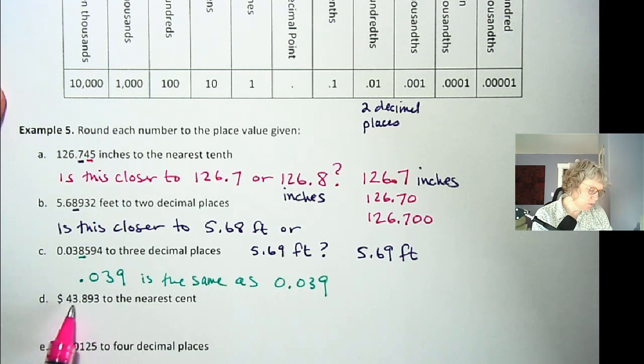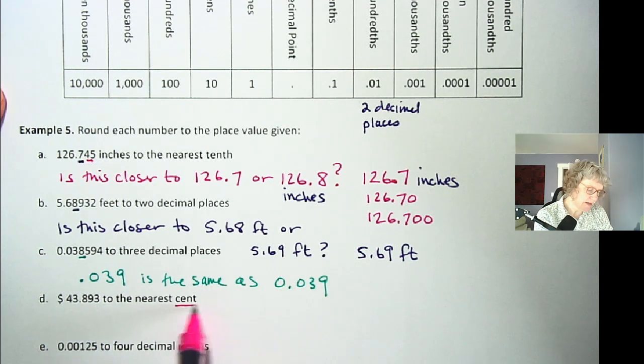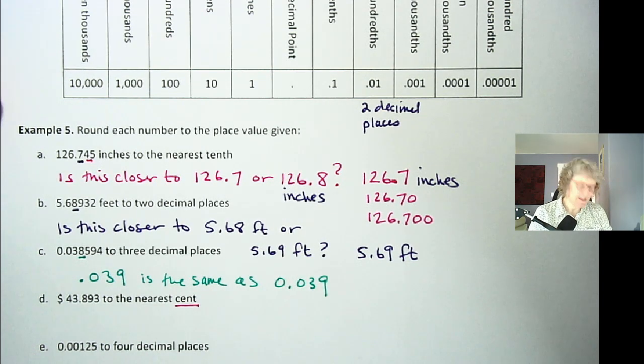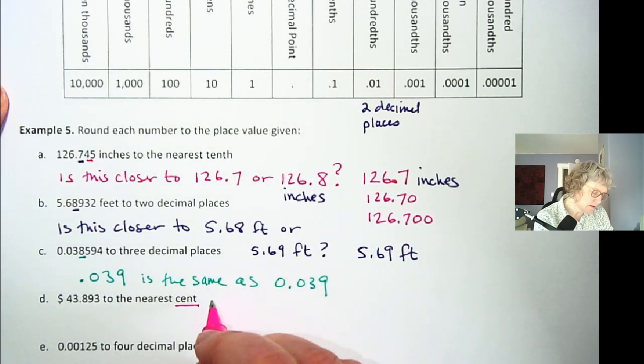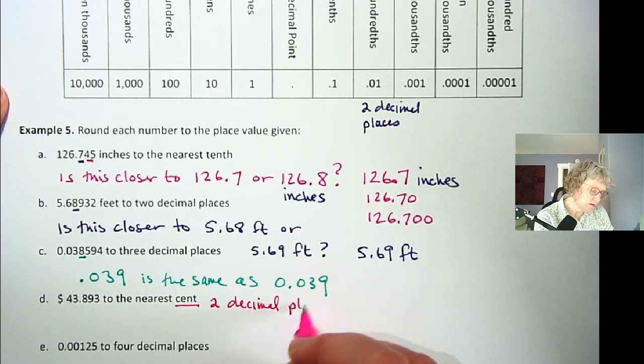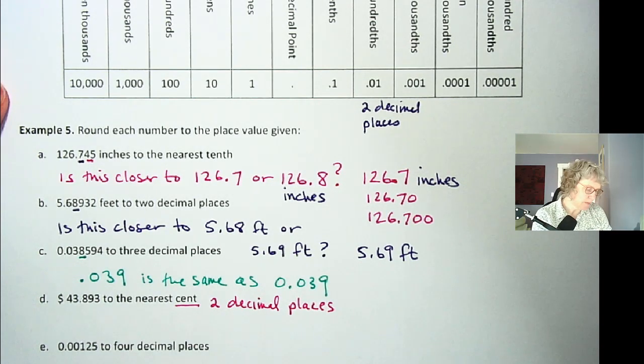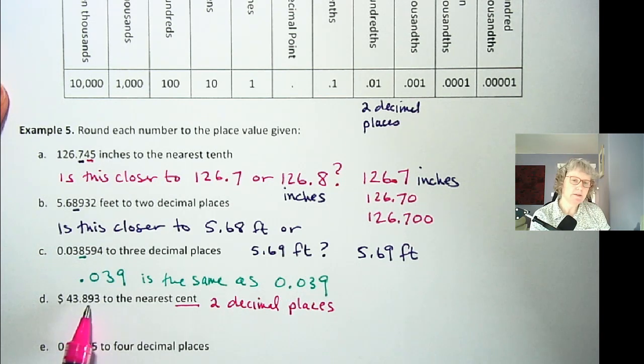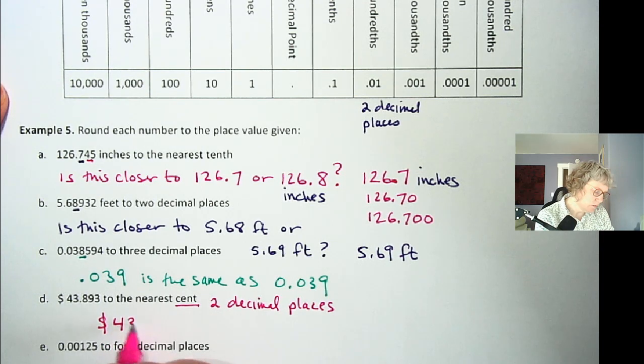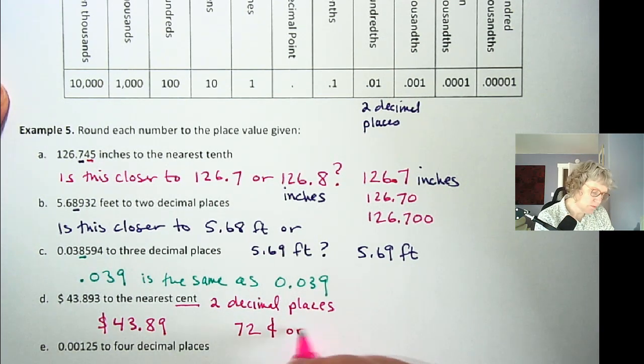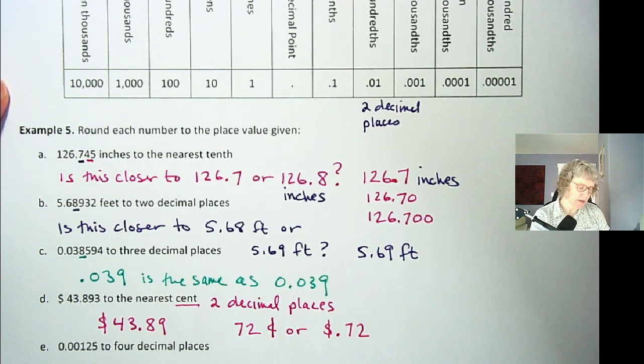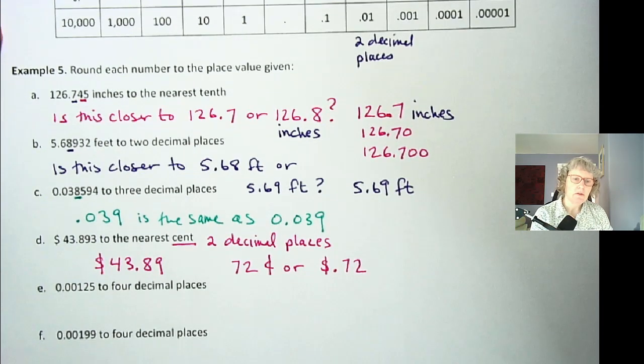Next one. Here we have some dollars. $43.893 rounded to the nearest cent. So you're probably familiar with dollars and cents a lot. Cents always has two decimal places, and that's because there's a hundred cents in a dollar. So cents are hundredths. Cent is two decimal places. In the US, whenever we're talking about money, we will use two decimal places. So $43, is this closer to 89 cents or 90 cents? And you can see that three is under five. So it's closer to $43.89. Let's say we just had 72 cents. You can put the cent symbol after it, or you can put the dollar with the decimal .72, in case that comes up.